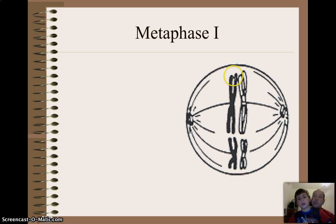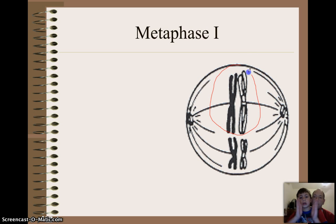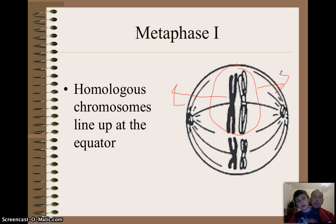They're lined up in a special way. This right here is what we call a tetrad. And what happens is that this pair of chromosomes are going to go that way, and this one is going to go that way. And so basically they all line up at what we call the equator of the cell.